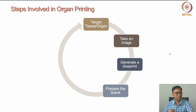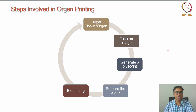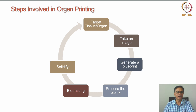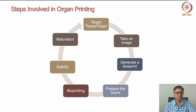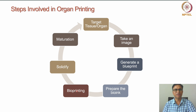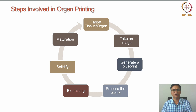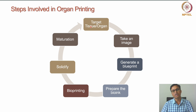Once the bio ink is prepared, the actual bioprinting step begins: the bioprinter uses the virtual blueprint and the bio ink to print the tissue structure. The structure is then allowed to solidify and stabilize. After that, it undergoes maturation, during which cells grow and lay down extracellular matrix. The biomaterials used are mostly biodegradable, so they degrade as the tissue matures. The matured tissue can then be used for various applications, including implantation at the target tissue or organ site.